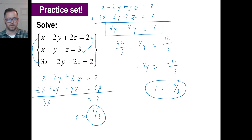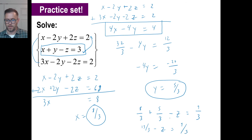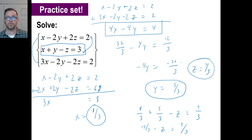Now let's find z. This looks like the easiest equation to use. x is 8 thirds, so 8 thirds plus y — that's 5 thirds — minus z equals 3, which is 9 thirds. So 13 thirds minus z equals 9 thirds, meaning z equals 4 thirds. Hope the process is clear for you, and I'll see you next time.